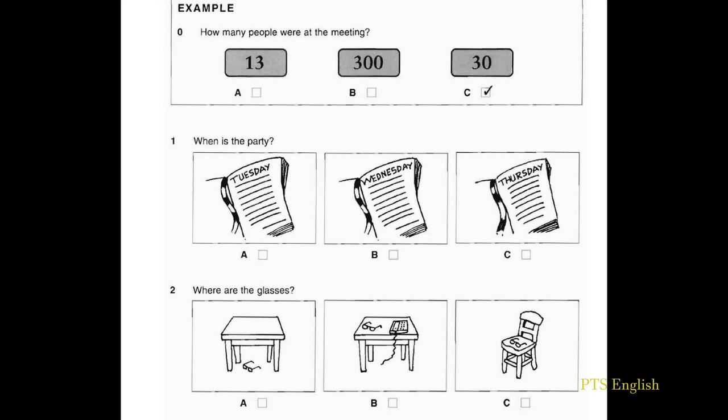Here is an example. How many people were at the meeting? Were there many people at the meeting? About 30. That's not many. No, but more than last time. The answer is 30. So there is a tick in box C.